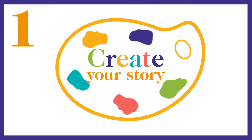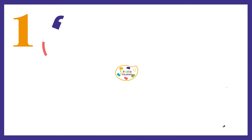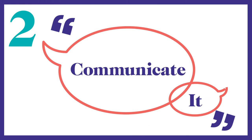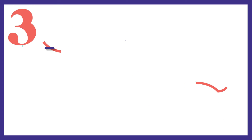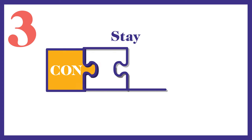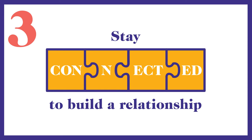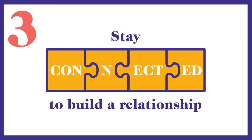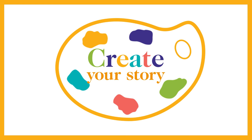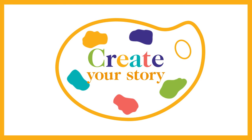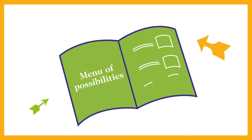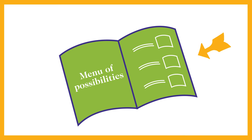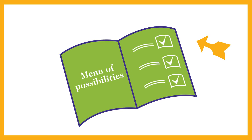You need to create your story. Secondly, you need to communicate it to your MP so they really get it. And thirdly, you need to stay connected to them to build a long-term relationship. So first, you need to create your story. And you can use the holistic case in the toolkit as a sort of menu of possibilities. Select the bits that are relevant to your organisation.